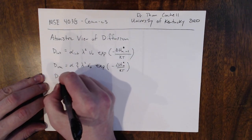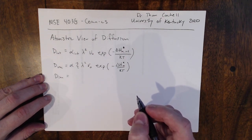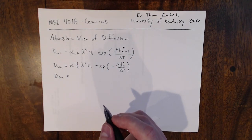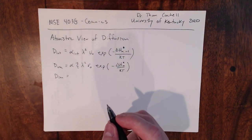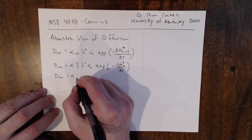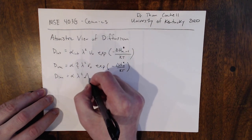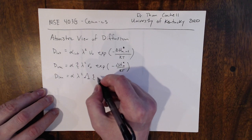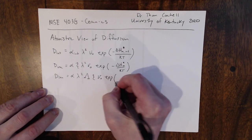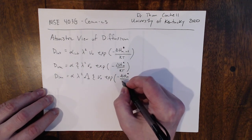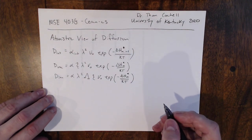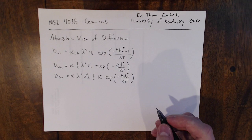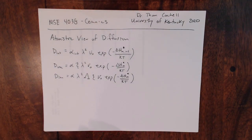Lastly, we have the ionic diffusivity D_ion, which instead of looking at the vacancy, looks at the actual ionic species. That expression is alpha, lambda squared, xi, nu naught, and then the exponential over kT. So these are our diffusivity expressions for interstitials, for vacancies, and for ionic species that we derived thinking about it from an atomistic view.